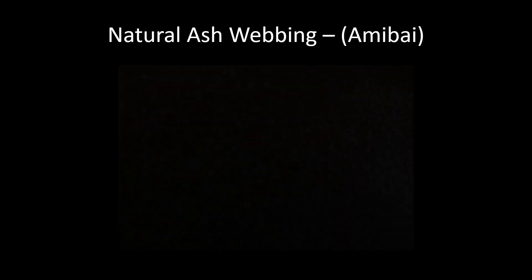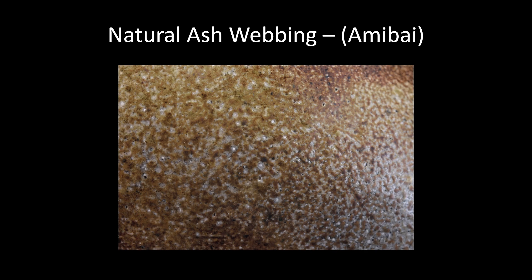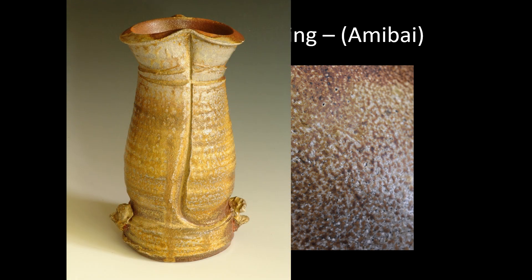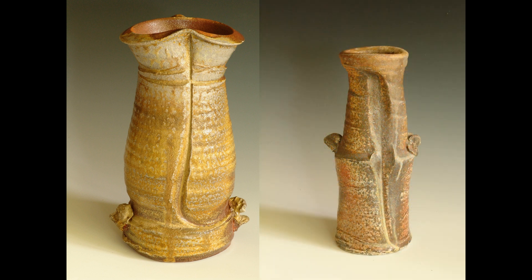Amibai is natural ash webbing, and this is the next step. After you get gomabai — the sesame seeds — then you get amibai, or this kind of spider webbing that happens just before it starts to form into rivulets and drips. Here you can see some examples of that stage of the amibai, and a little bit of han ten. On a piece, you'll have many different effects — it won't all be just one, but there may be one effect that is predominant.